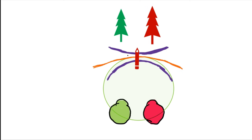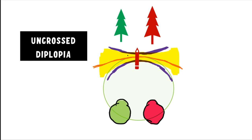When you focus on the pencil, Panum's fusional area is centered on the pencil and the tree appears double. In this case, occluding the right eye makes the right image disappear and occluding the left eye makes the left image disappear — the images correspond to the respective eyes, making this an uncrossed physiological diplopia.